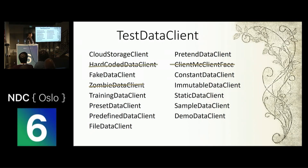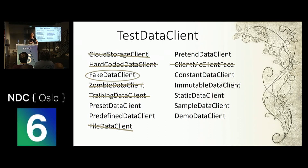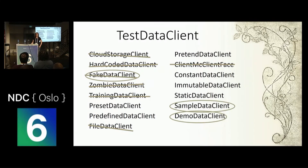Then we started cutting. ClientMcClientFace gives you an easy starting point — nobody's going to complain too loud when you cut that one. HardCodedDataClient was a little hard to read. TrainingDataClient made it sound like machine learning. CloudStorageClient and FileDataClient were too closely coupled to the implementation. We came back to FakeDataClient — somebody liked that it's obvious it's not for production — but it still had the issue of not actually being fake data. That led us to SampleDataClient and DemoDataClient, which aren't going to be mistakenly used in production but don't have that fake-versus-real limitation. In the end, we settled on DemoDataClient, and it exists in our codebase to this day.